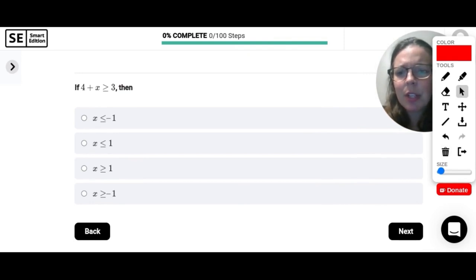If 4 plus x is greater than or equal to 3, then looks like they want us to solve for x. So 4 plus x, all you have to do is subtract this 4 to get x by itself. So subtract 4 from both sides. And we're left with x. This greater than or equal to 3 minus 4 would just be negative 1. Nice and easy. One step. So x is greater than or equal to negative 1.